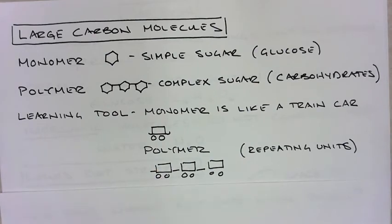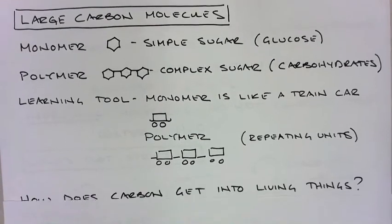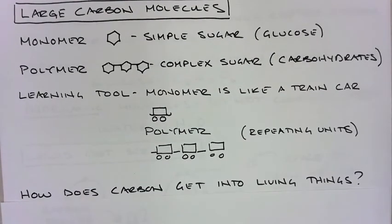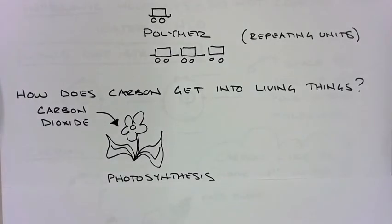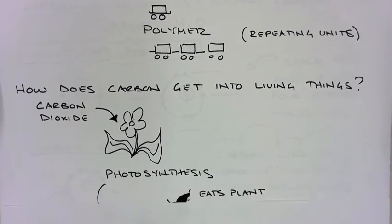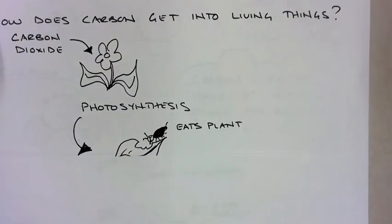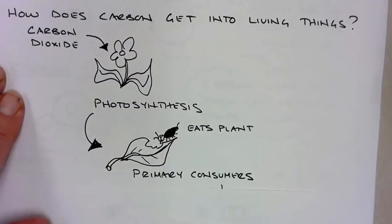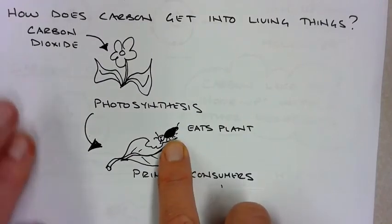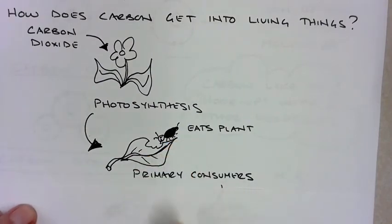How does carbon get into living things? The first process is through photosynthesis - plants take in carbon dioxide. Plants are then eaten by primary consumers. For example, this little bug is eating this plant right here.